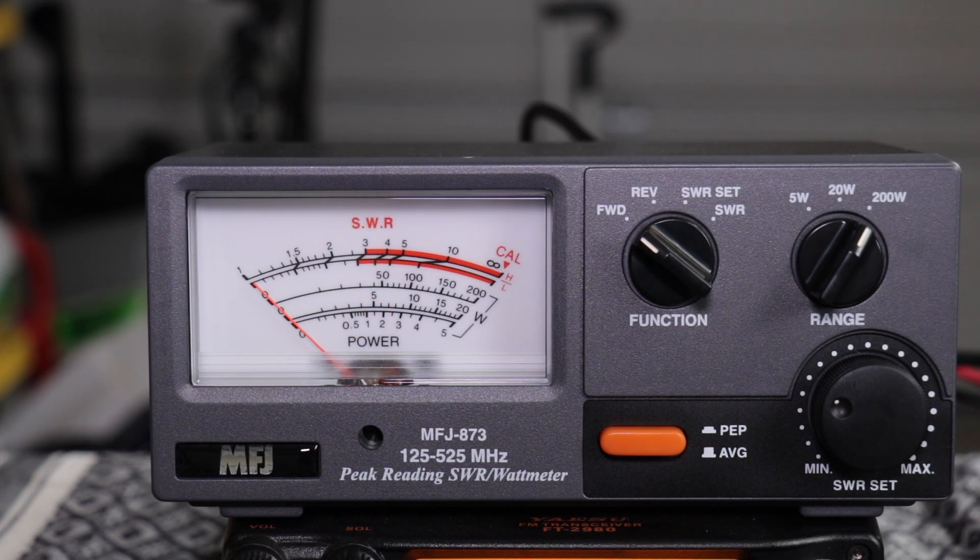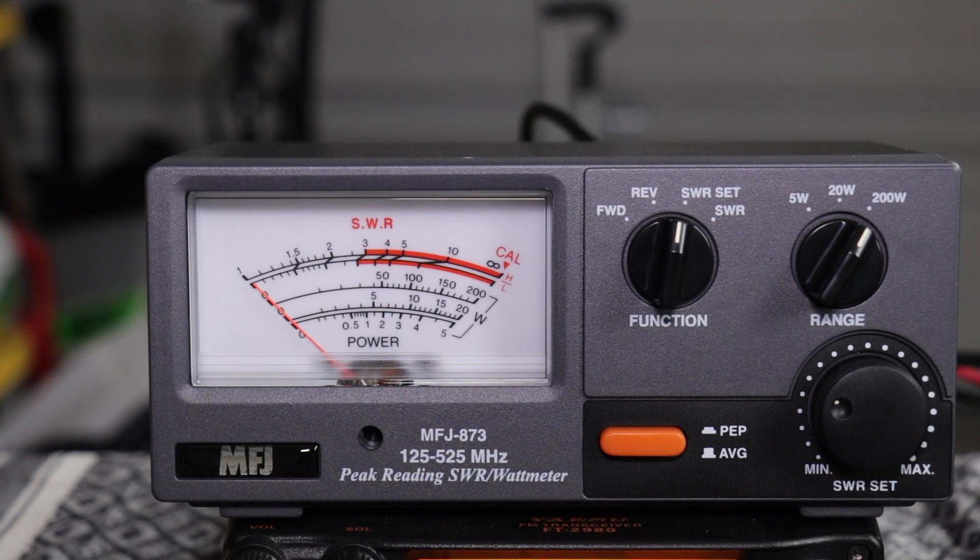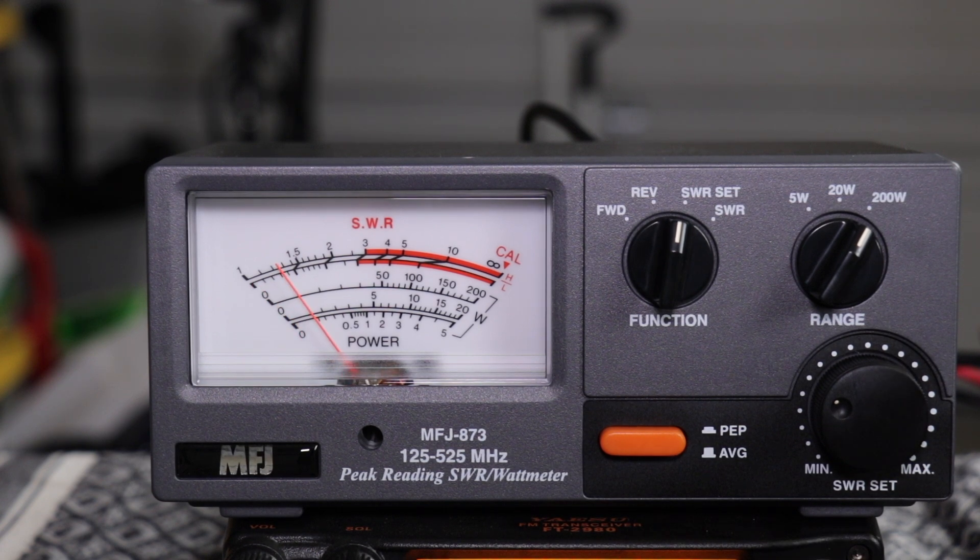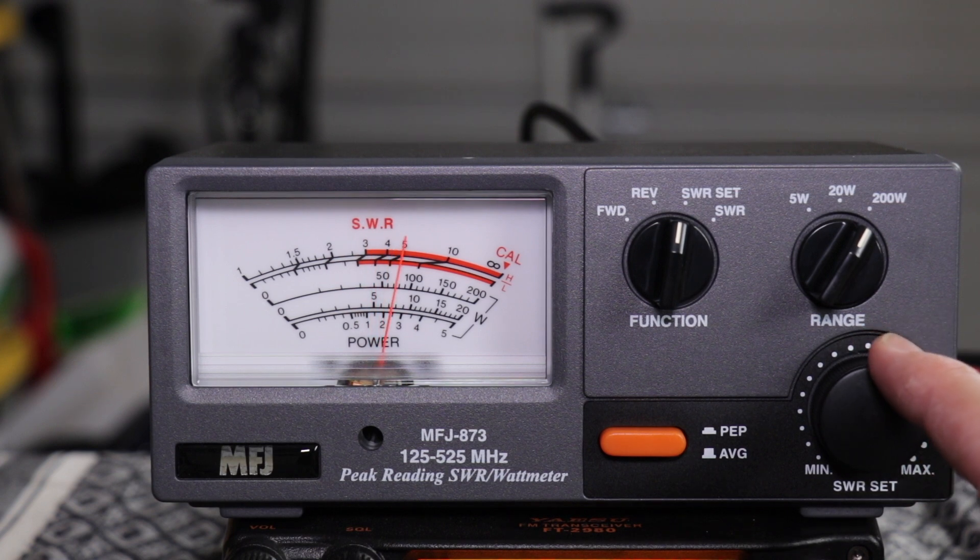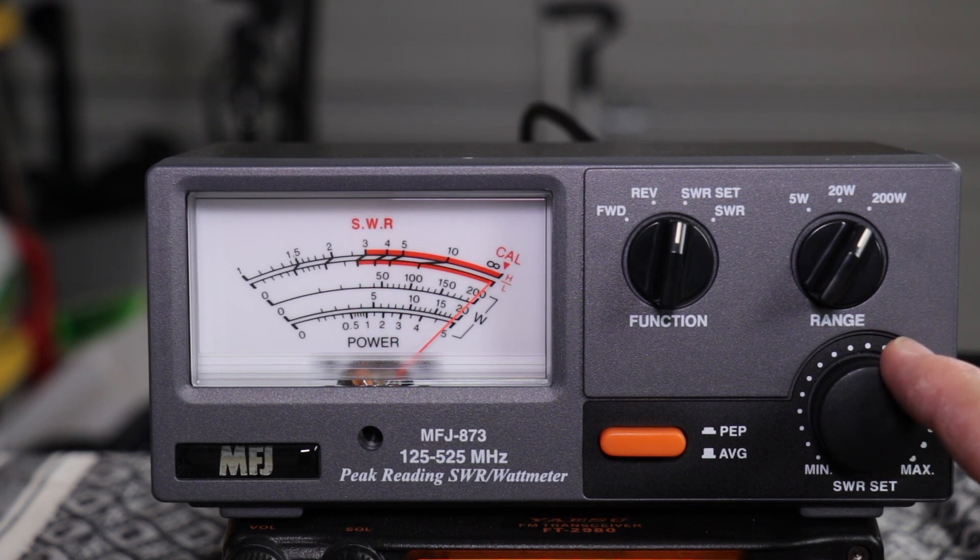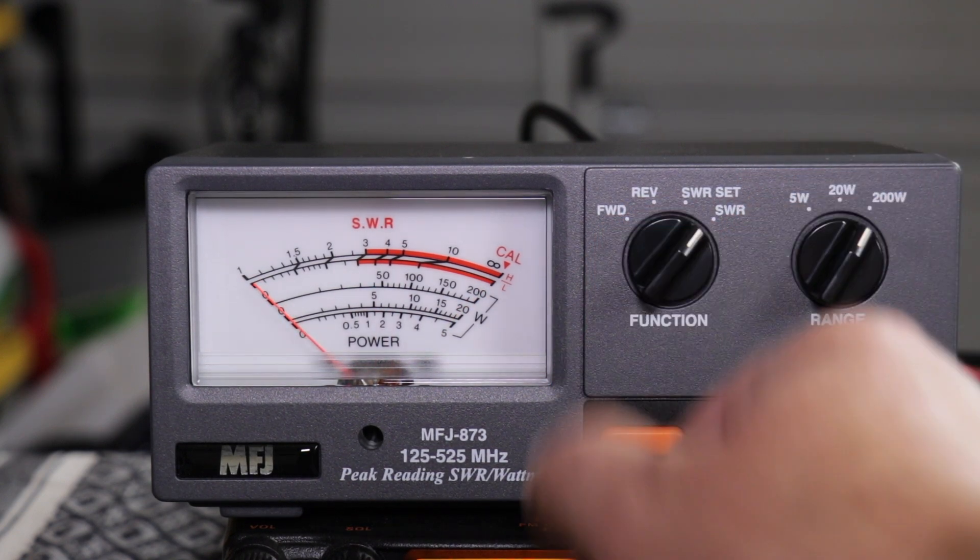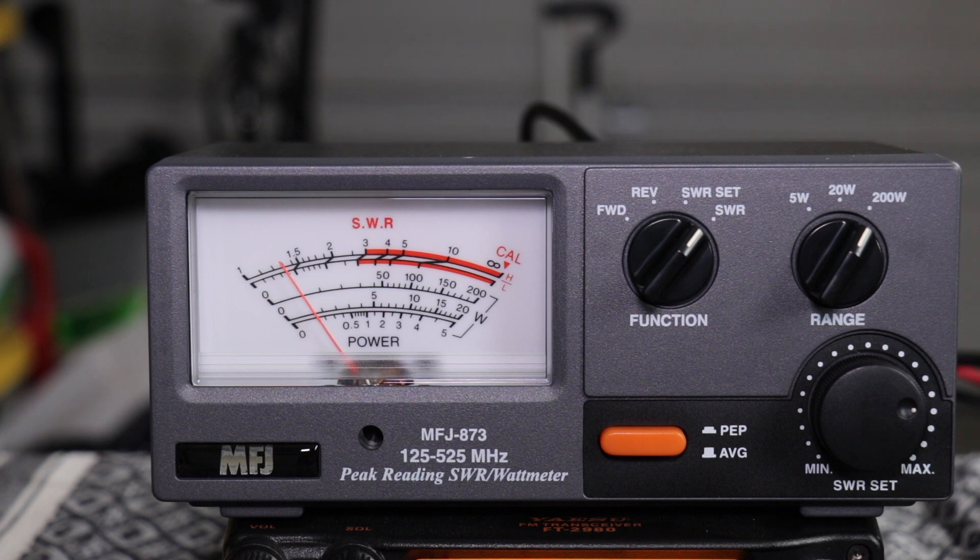To check the SWR you turn the function dial to SWR set, key the radio, turn the SWR set dial until the needle is right at the triangle underneath the word CAL. Once that's done turn to SWR and then key the microphone again. It looks like I'm at about 1.2 and a half.